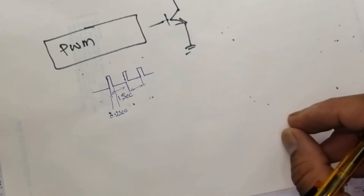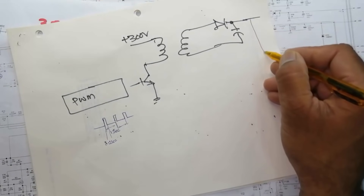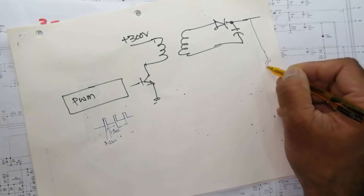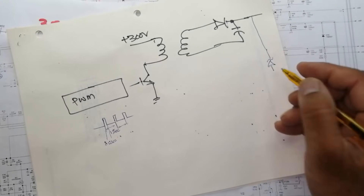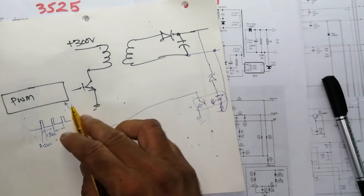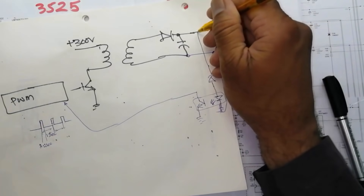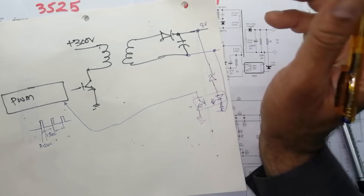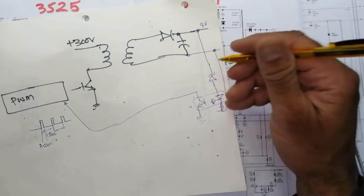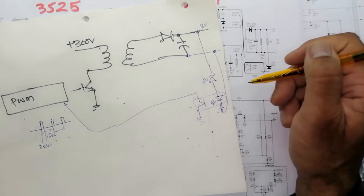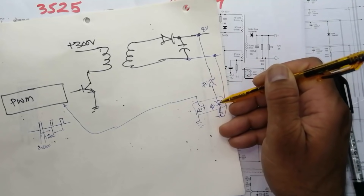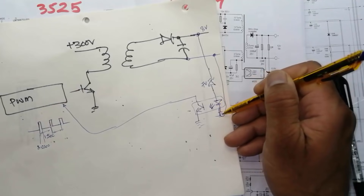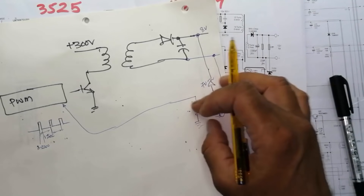So it is switching: 0.2 second on, 0.8 second off. Now I have an output monitoring circuit. I connect some reference — it is just for example. Now it started switching. For example, I am taking 8 volt here as output. I applied a 7 volt zener. This zener will drop 7 volt at 8 volt. This optocoupler will take voltage and it will start switching — it's a rough example.